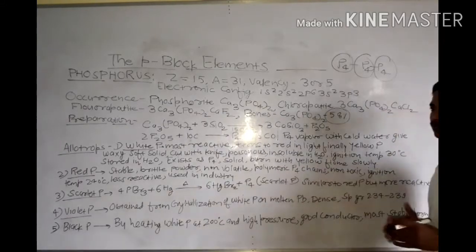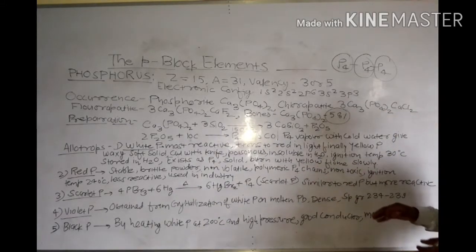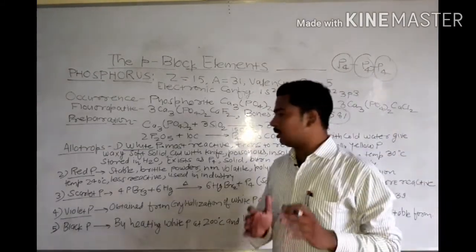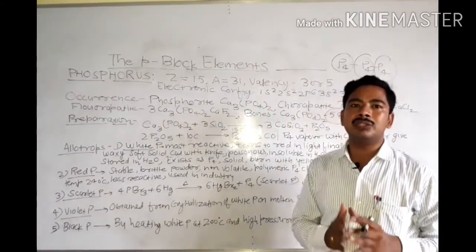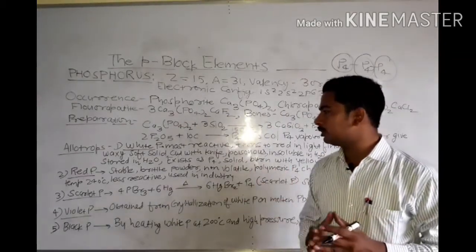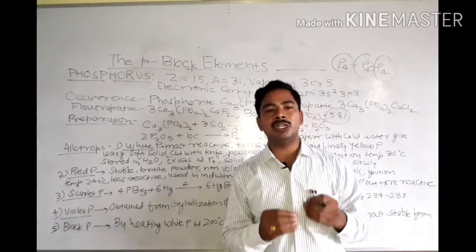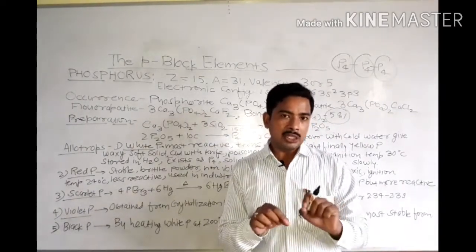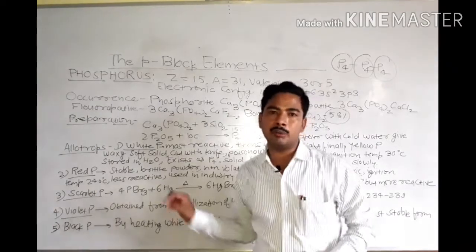Red phosphorus is non-toxic. Its ignition temperature is 240 degrees Celsius. Its reactivity is low compared to white phosphorus — it is less reactive. Red phosphorus is most commonly used in industry, for example on match boxes.